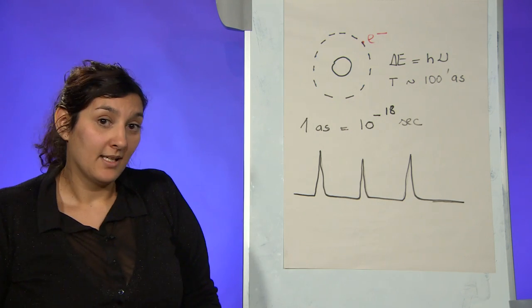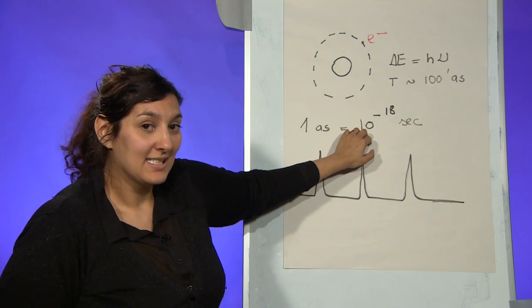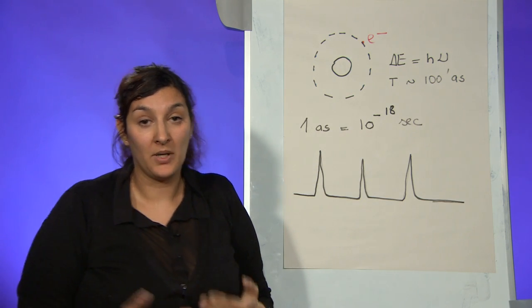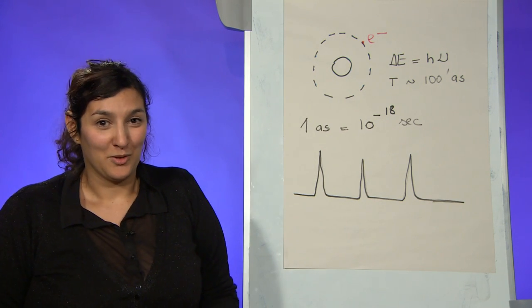So what is an attosecond? An attosecond is actually 10 to the minus 18 seconds. And to give you an idea about what an attosecond is compared to a second, well it's exactly the same as comparing a second to the age of the universe.